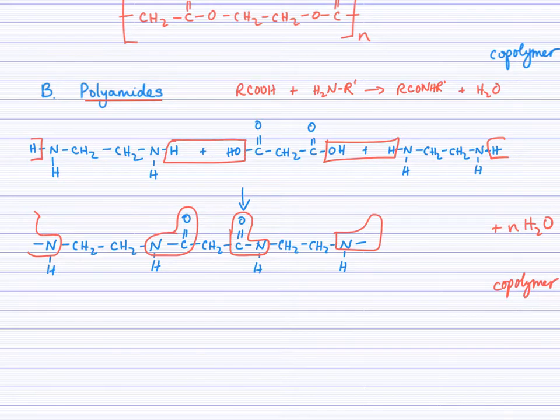You'll notice the amide linkages again in a copolymer are facing in opposite directions. Now over here I have suggested the next amide linkage that will be forming. This is the same reaction that happens when amino acids link together forming peptide bonds. In fact, they are amide linkages.